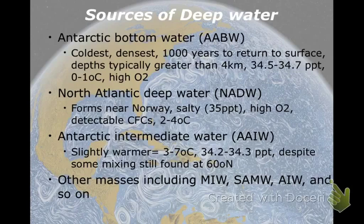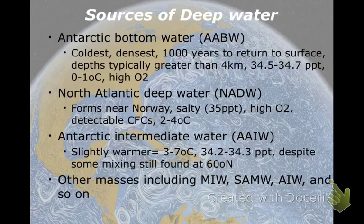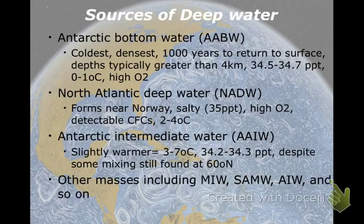We're going to talk about those sources of water in greater detail now. AABW is Antarctic Bottom Water — hopefully you know where the abbreviation comes from. It's the coldest, densest water on the planet. It moves very slowly — it takes about a thousand years to get back to the surface once it downwells. It's the deepest, found on average greater than four kilometers down. Its salinity is around 34.5 to 34.7 PPT — sort of average for deep water. You should make note of the temperature and salinity for all of these and be able to tell me which one's coldest, warmest, high salinity, low, or medium.